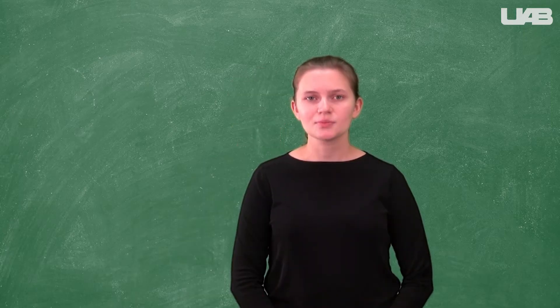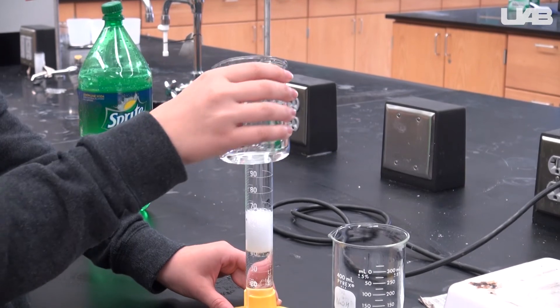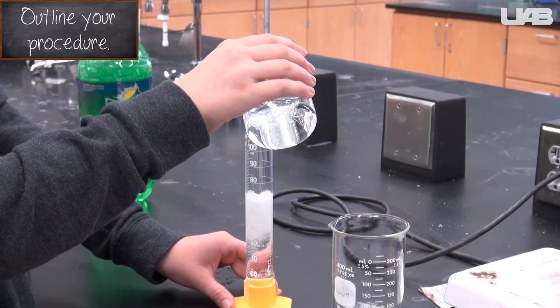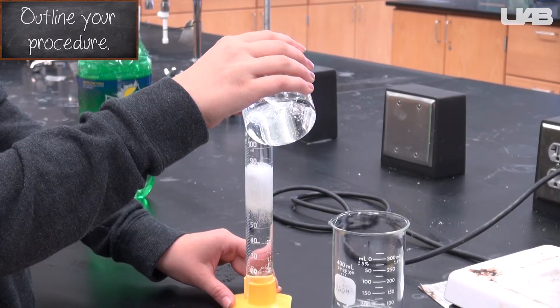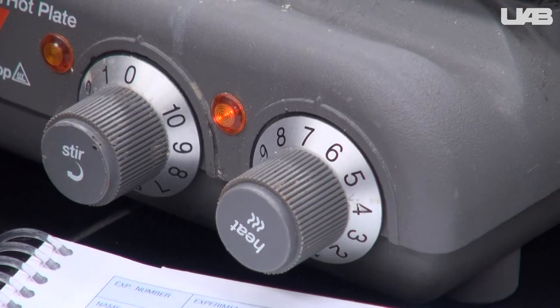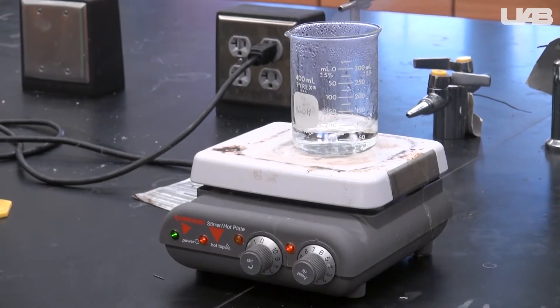To find out how much acid is present in soda, you will follow the exact same procedure. Before you start your titration, you will need to get rid of the carbonation. Accurately measure out about 100 milliliters of soda, then heat it in a beaker for about 15 minutes. Add water to bring the volume back to the starting volume.